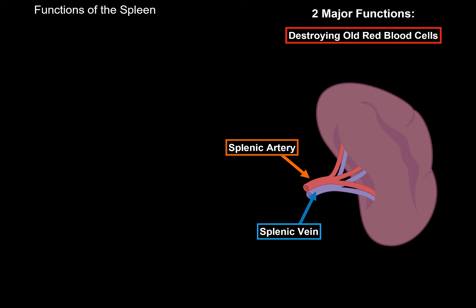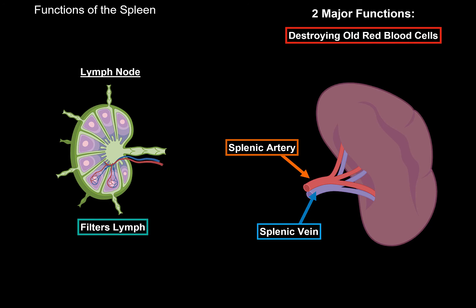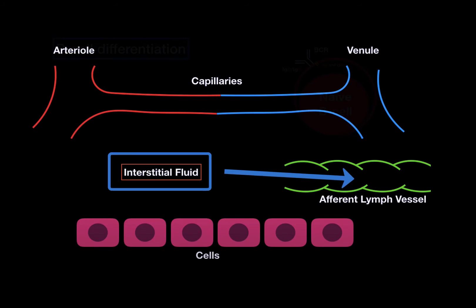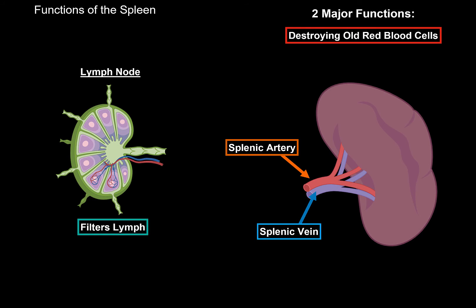Even though the spleen is part of the lymphatic system, it does not actually filter lymph like lymph nodes do. Blood is coming into the spleen, so the spleen, even though it's classified as a secondary lymphatic organ, monitors blood — not lymph. Lymph nodes monitor lymph: interstitial fluid is drained by lymph vessels into lymph nodes, which then monitor it for microorganisms before dumping it back into the blood vessels. The spleen, by contrast, monitors blood.